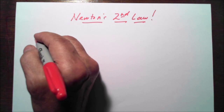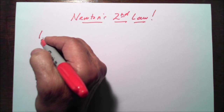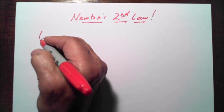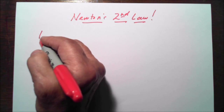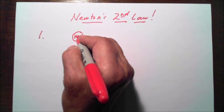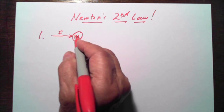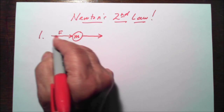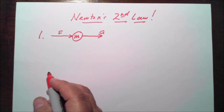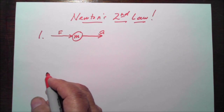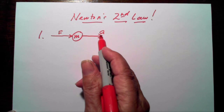Newton's Second Law says really three things. Number one, if you apply a force to a mass, that mass will accelerate in the direction of the force. If I have a mass M and I apply a force F to that mass, it will cause that mass to accelerate in the direction of the force. Notice that the force and the acceleration A are both in the same direction. That's the first precept of Newton's Second Law.